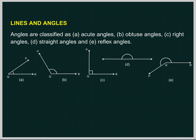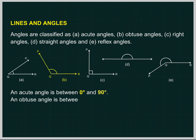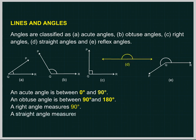An acute angle is between 0 degree and 90 degree. An obtuse angle is between 90 degree and 180 degree. A right angle measures 90 degree. A straight angle measures 180 degree. A reflex angle is between 180 degree and 360 degree.